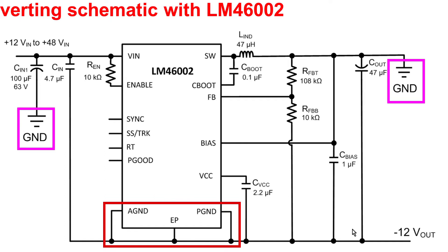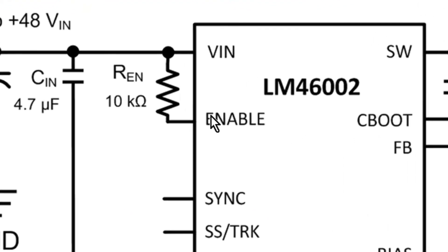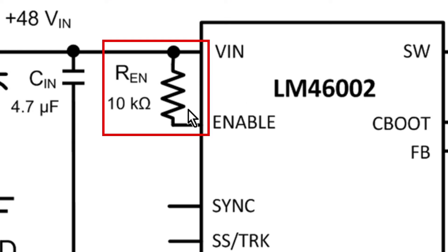I mentioned earlier that the IC ground is at minus 12 volts, whereas the system ground is at 0 volts. The resistor that we've used here to enable the part is pulled up to VIN.